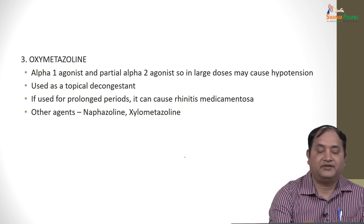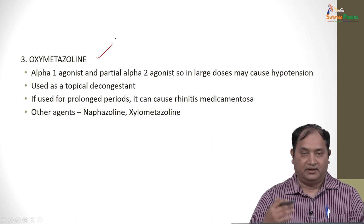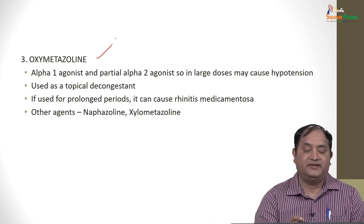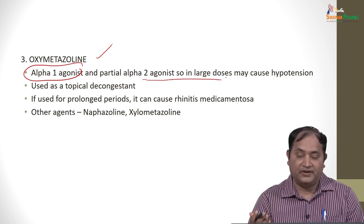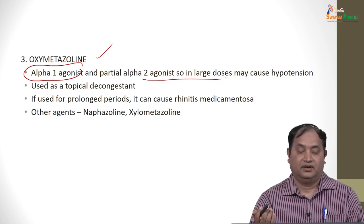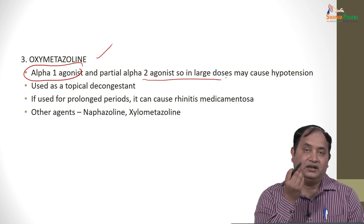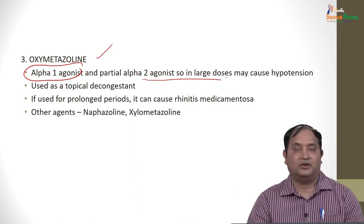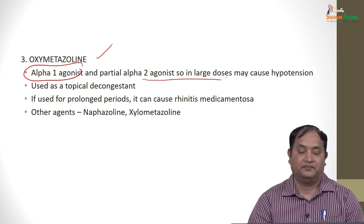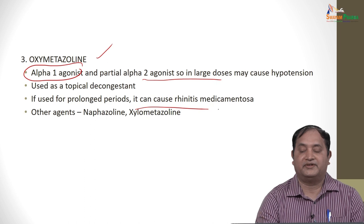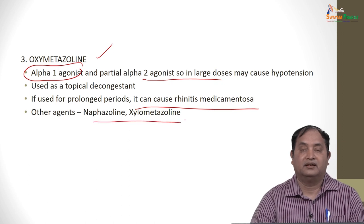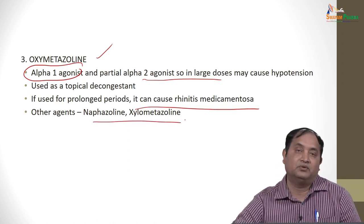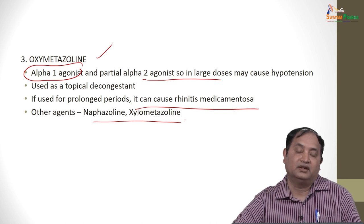Oxymetazoline is an alpha 1 agonist and a partial alpha 2 agonist at large doses, which may cause hypotension. It is used as a topical decongestant — in common cold you can use nasal drops of oxymetazoline to clear the nose. However, prolonged use causes rhinitis medicamentosa. Other similar agents include naphazoline and xylometazoline.